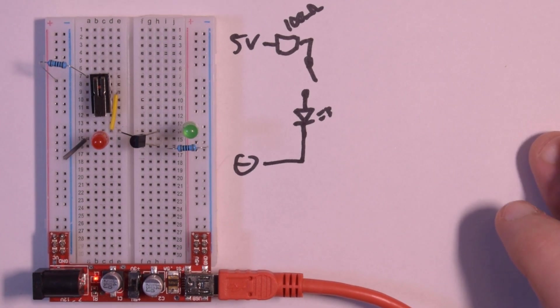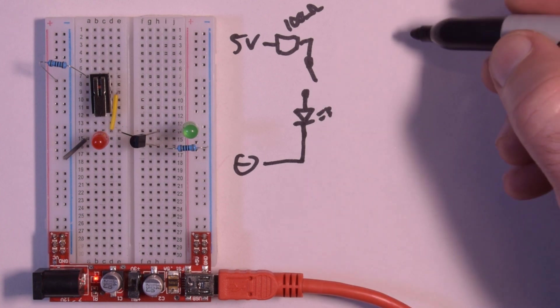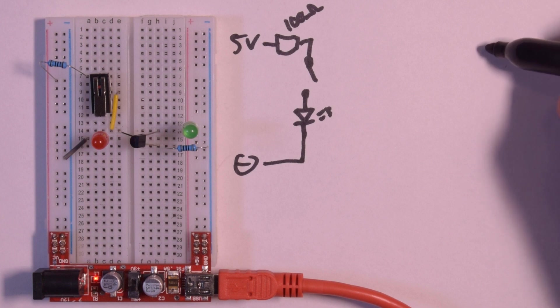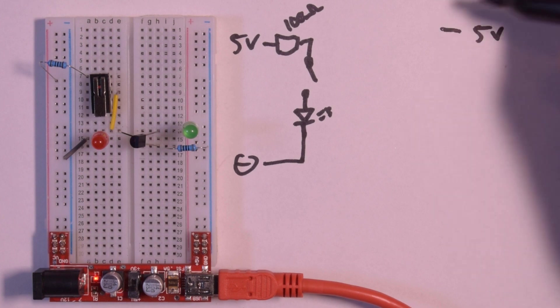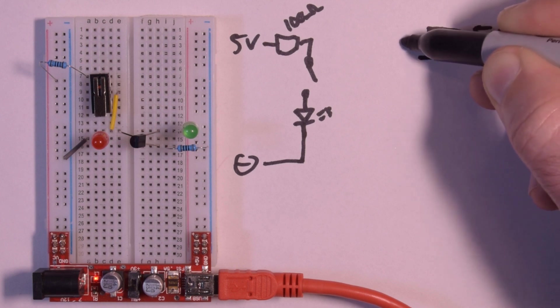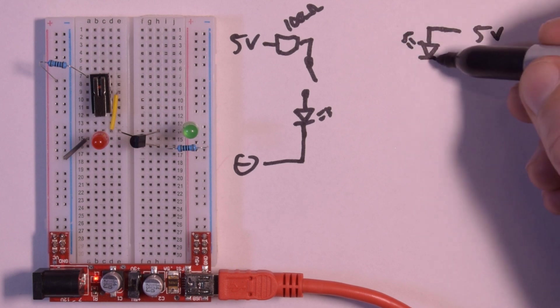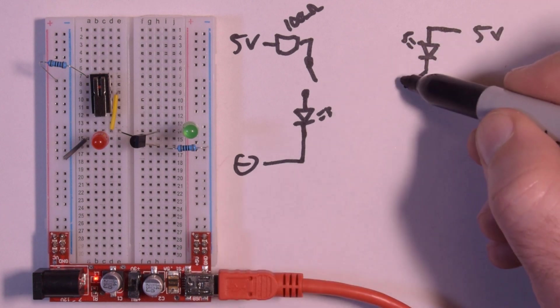We still have our switch, we still have our LED, and we still have our ground. But what we've changed is that on the other side here, instead of a switch, what we have is something a little bit different. So we still have our 5 volts that's coming in to an LED like that.